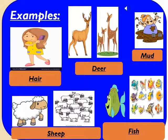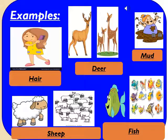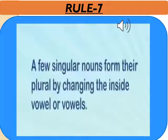Same way: mud, sheep, and fish. Whether it is one sheep or many sheep, whether it is one fish or many fish, you will always say sheep, fish, mud, deer, hair, and many more. Now let's jump to rule number 7.